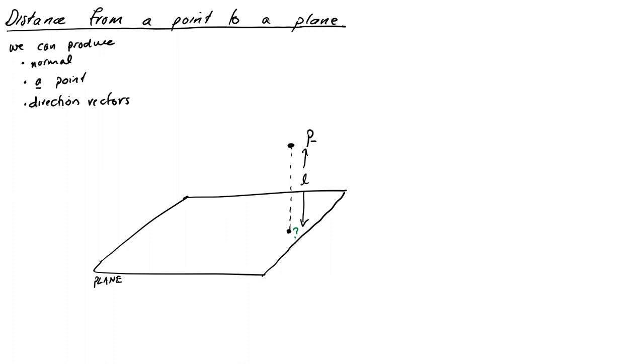Maybe the hunch that you might have is that the normal vector might be particularly relevant because we're looking at things coming out of the plane at right angles. So let's assume that we have our normal and we've also got some point Q on the plane. We can't be very specific about where it is but let's just assume we've got one. And let's draw these onto our picture.